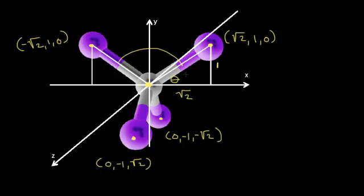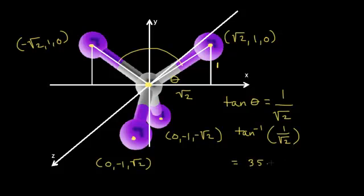So I can find out what theta is because I know that tan of theta is equal to opposite over adjacent. So for this triangle I have here, the opposite side would be 1 and the adjacent side would be square root of 2. So to find theta, all I have to do is take inverse tan. So I take inverse tan of 1 over square root of 2 on my calculator, and I get 35.26 degrees.